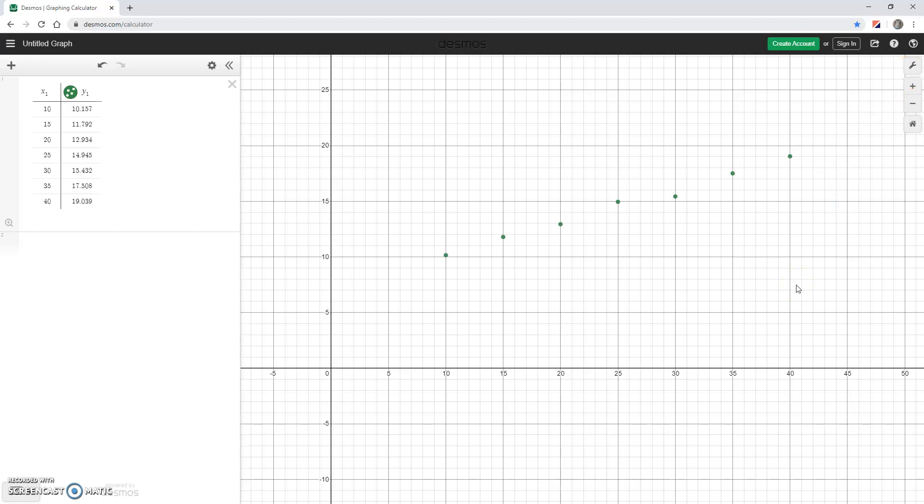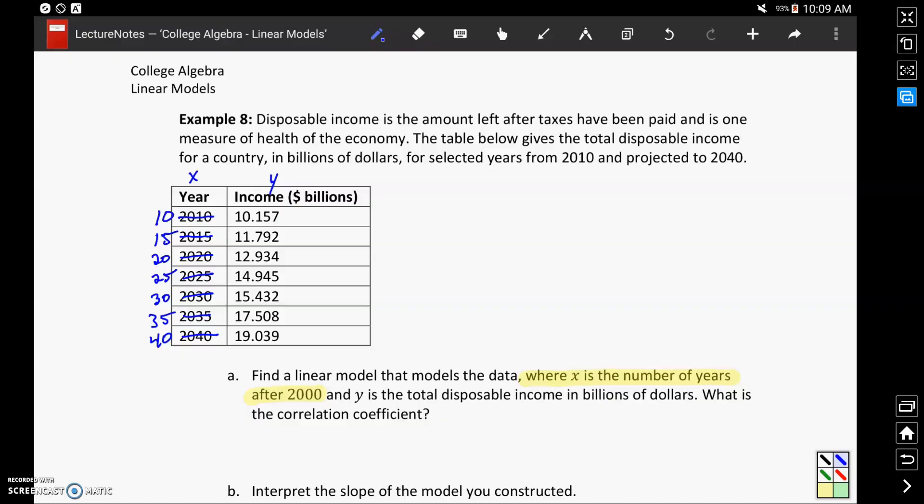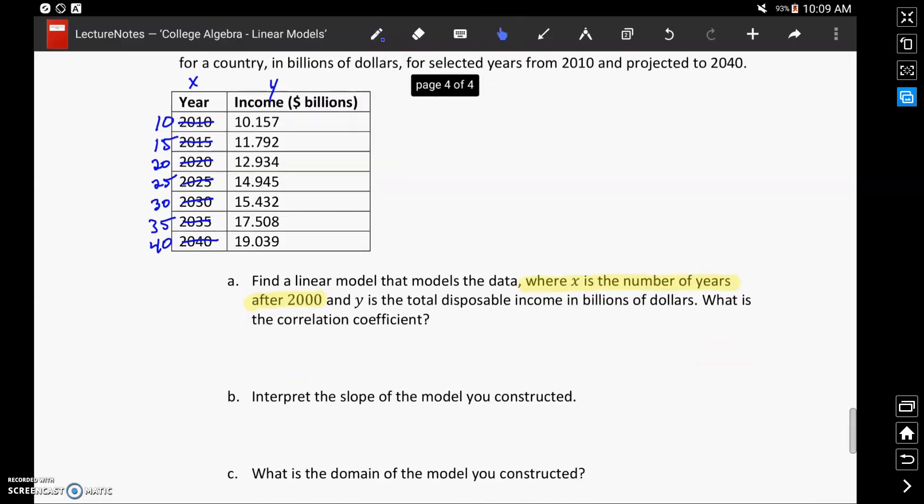We have our data, and then in Part A, we want to find that linear model that's the best fit for this data. We'll type in Y1 tilde M times X1 plus B, and Desmos will give us that value for M and for B, as well as that correlation coefficient. We can change the color of our different visualizations here to match up. So what we end up with for this data is the linear equation Y equals 0.290 times X plus 7.298 with a correlation coefficient of R equals 0.9954.